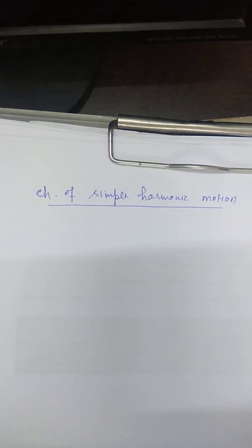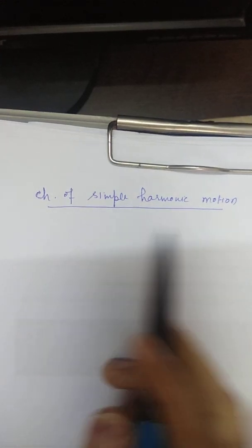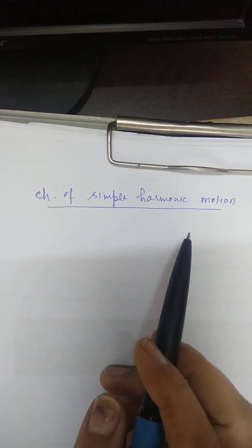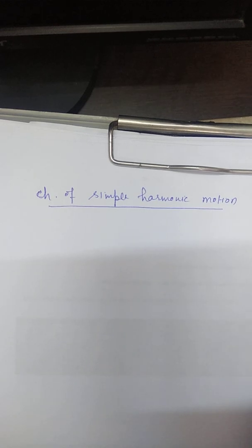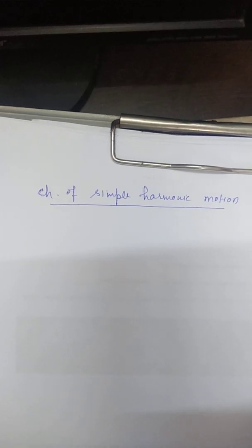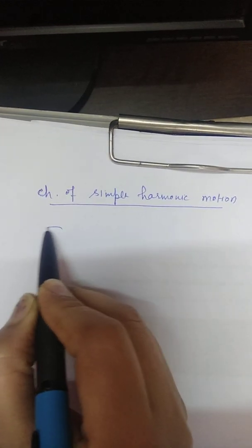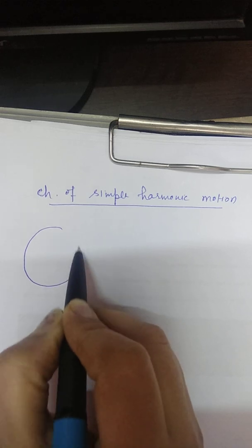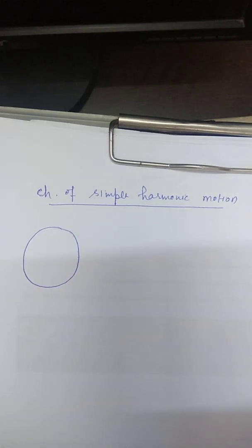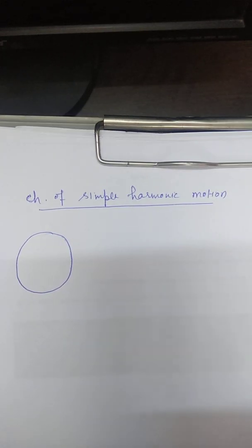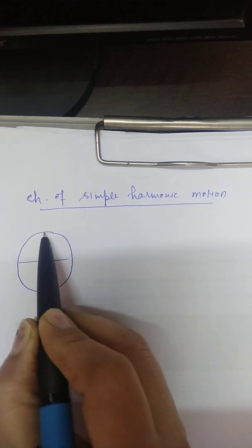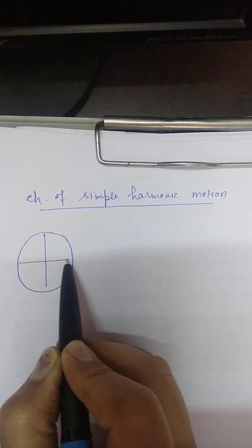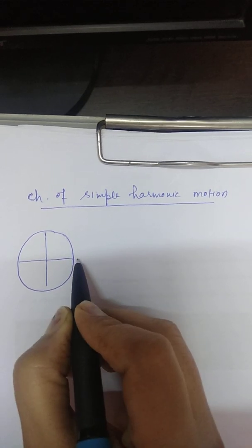Good morning students. In today's lecture, we will discuss the characteristics of simple harmonic motion. Before that, in the last lecture, we discussed that simple harmonic motion is equivalent to the motion of a particle in a circular path. The particle which moves in it is called the reference particle.